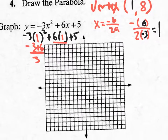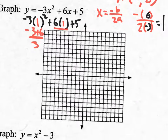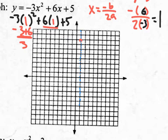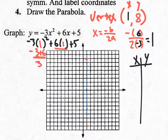Let me go to the graph and plot the vertex at (1, 8), then draw the axis of symmetry. Now I just need some points on the same side of the axis of symmetry using an x-y table. I'm going to stop here and continue on the next video — we ran out of time, I apologize.